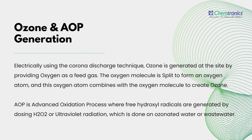Principle of Generation of Ozone and AOP. Electrically, using the corona discharge technique, ozone is generated at the site by providing oxygen as a feed gas. The oxygen molecule is split to form an oxygen atom, and this oxygen atom combines with the oxygen molecule to create ozone. AOP is an advanced oxidation process where free hydroxyl radicals are generated by dosing H2O2 or ultraviolet radiation, which is done on ozonated water or wastewater.